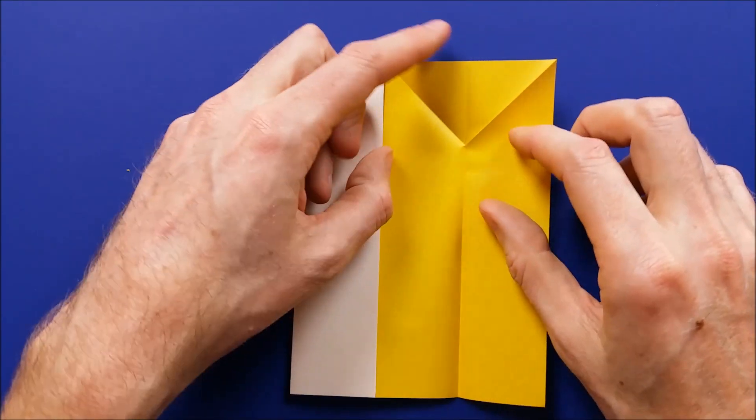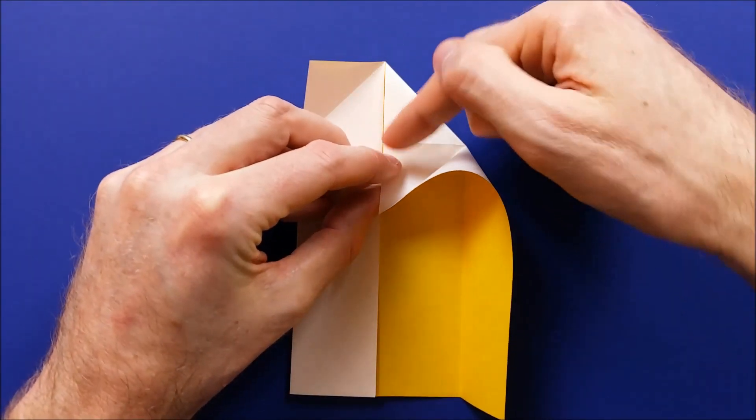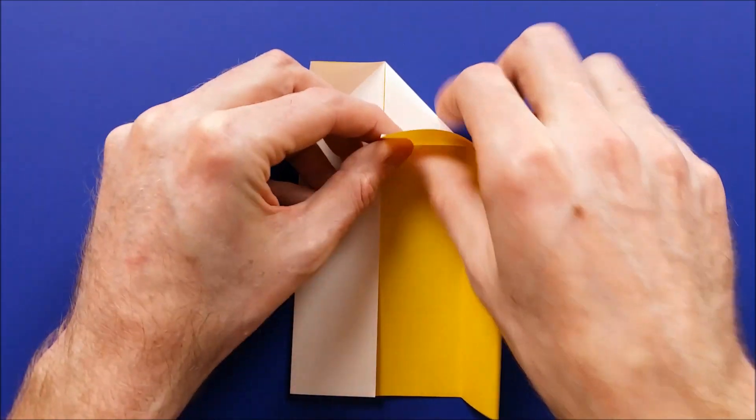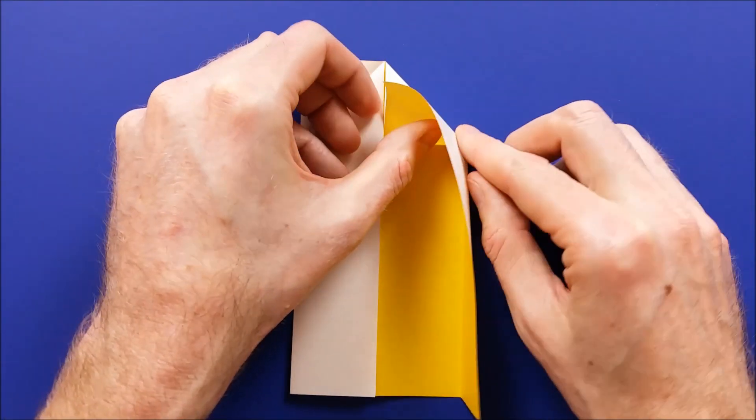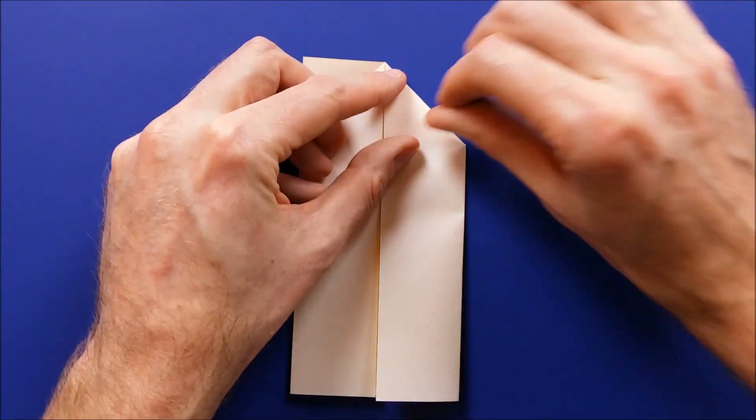So to do this, open like this. Fold this again. We are going to invert this fold in the middle and invert this fold as well, so that you can flatten like this.